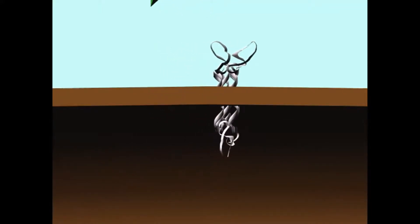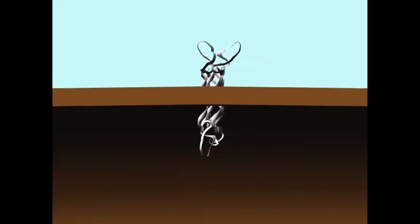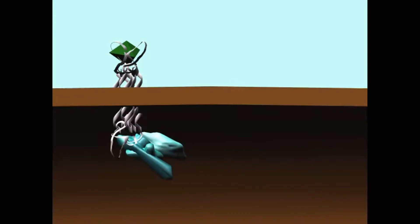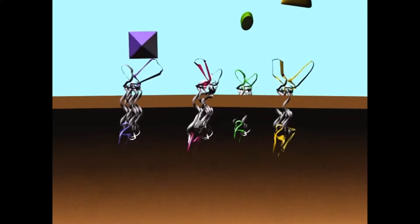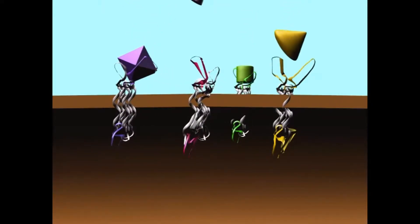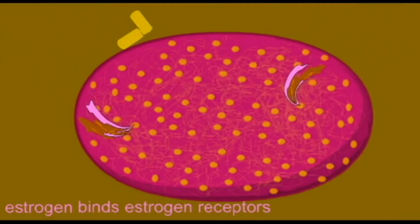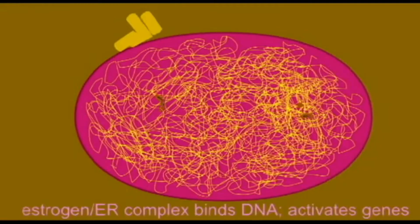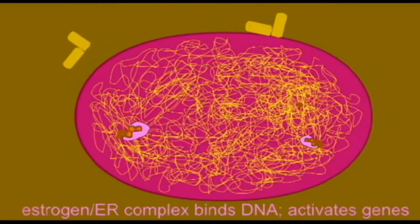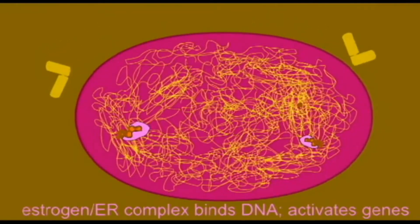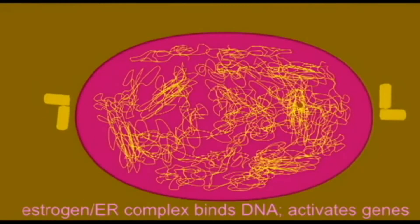Well, there's a simple version of the story. Unlike most hormones, which bind to a receptor on the cell membrane and activate second messengers, steroid hormones — because steroids like estrogen are non-polar — can pass through the cell membrane, where they bind to receptors inside the cell. The receptors and the hormones bound to them then go to the nucleus, where they bind to DNA and change which genes are turned on or off.